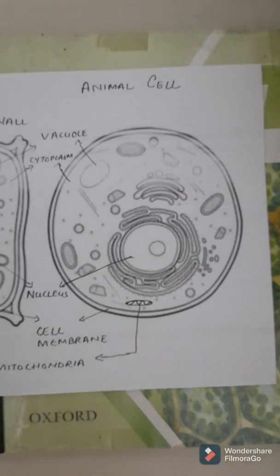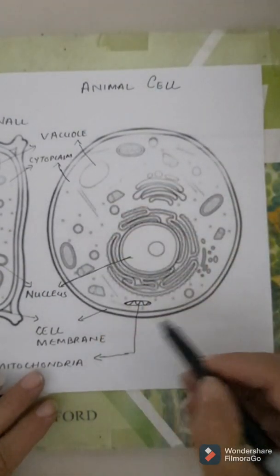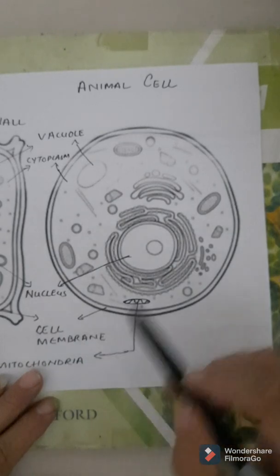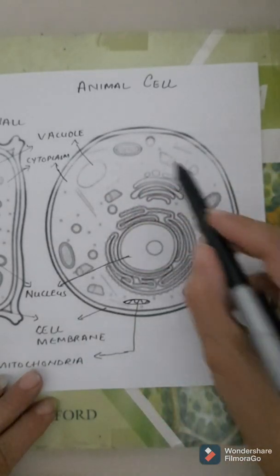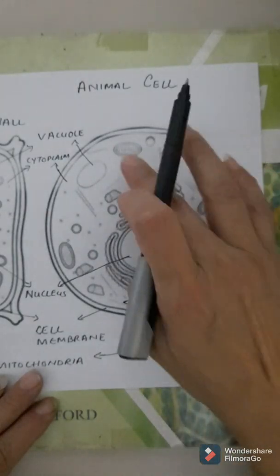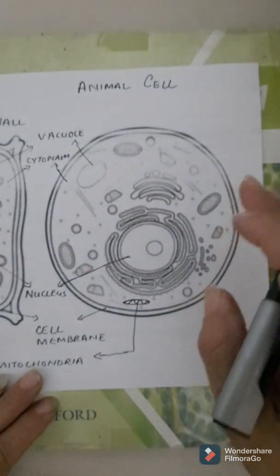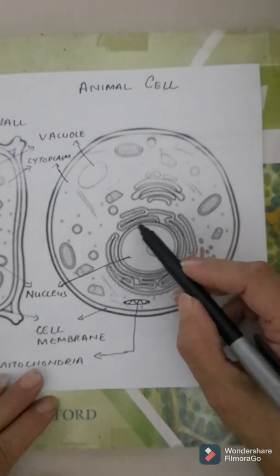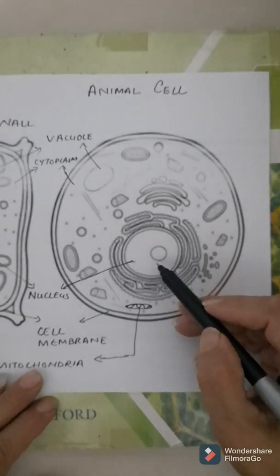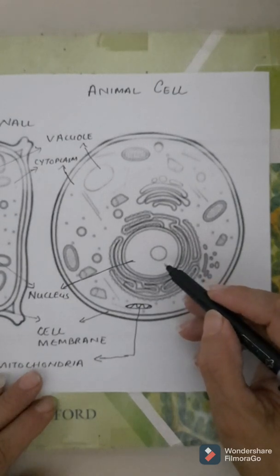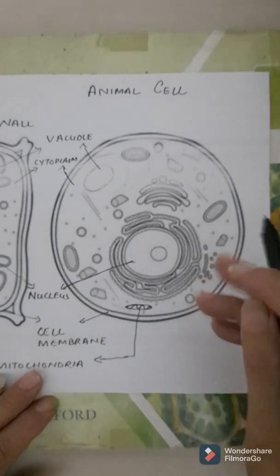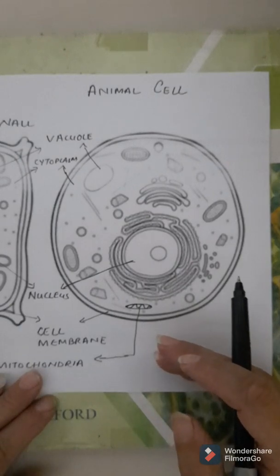Now I am going to teach you all the parts of the cell along with their functions with the help of a diagram. This is the diagram of an animal cell. Its outer covering is known as the cell membrane. Inside the cell membrane there is a jelly-like substance — the cytoplasm. All the organelles are suspended in the cytoplasm. In the middle of the animal cell we have the nucleus, which is the control center of the cell, controls all activities, helps in cell division, and contains DNA which carries hereditary material from parents to offspring.